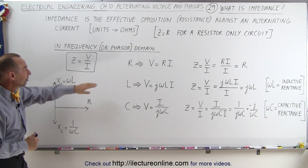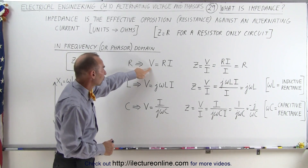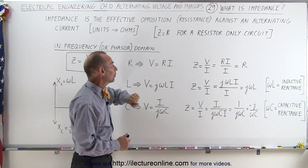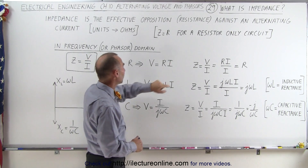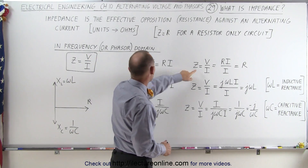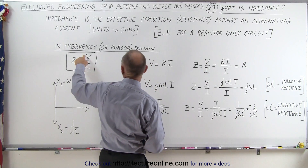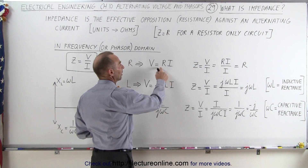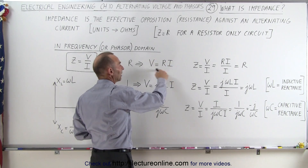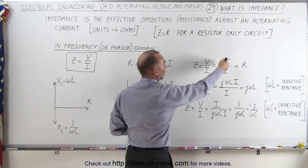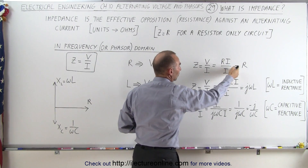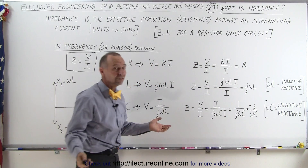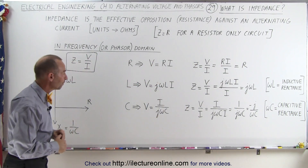Now for resistors, notice that the voltage across the resistor is the resistance times the current. Since Z equals voltage divided by current, and the voltage is defined as resistance times current, you cancel out the current and you can see that the impedance is equal to the resistance for resistors.